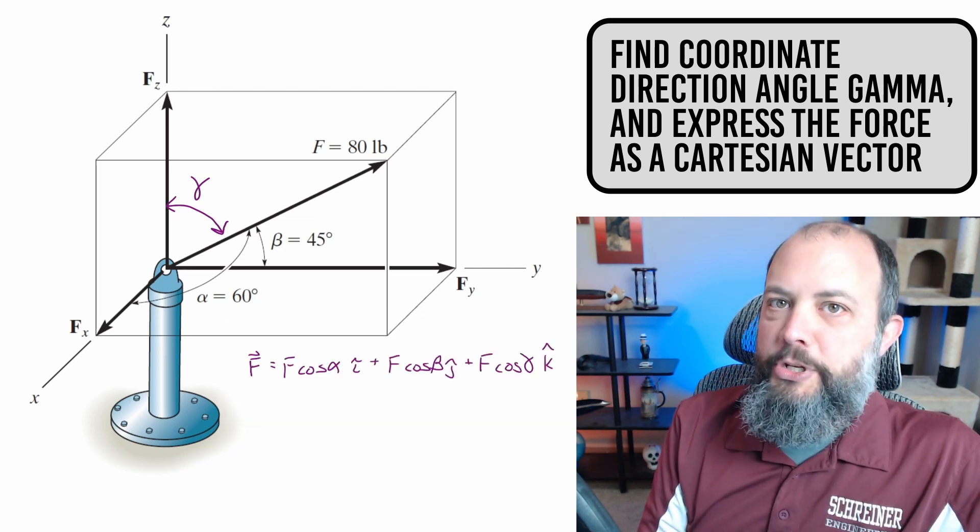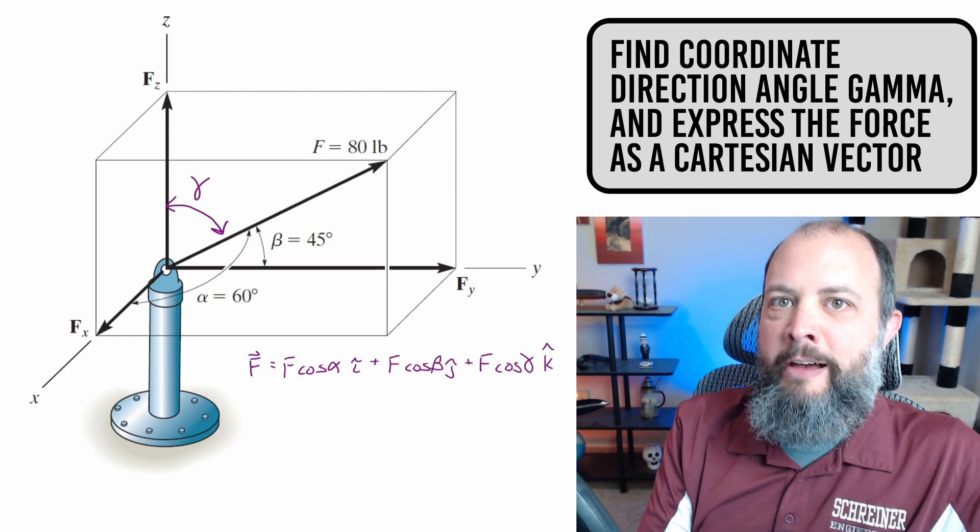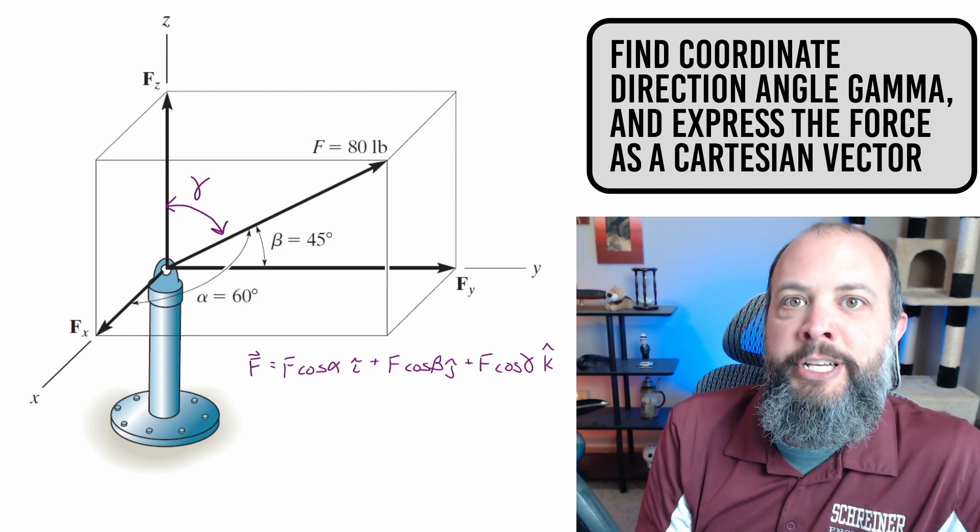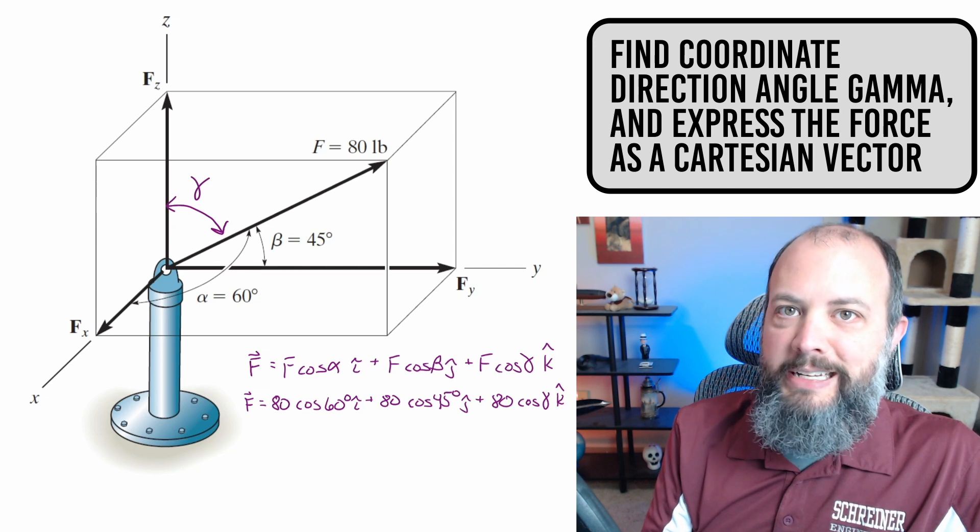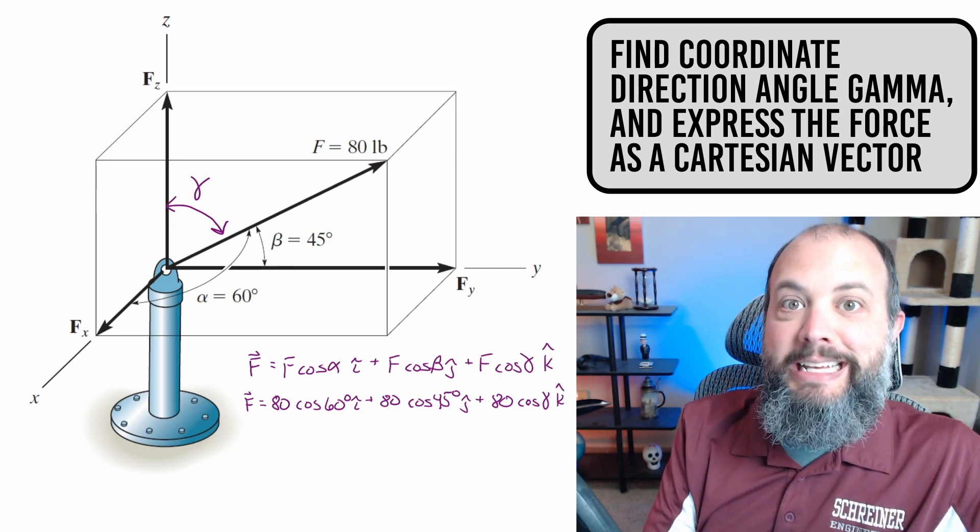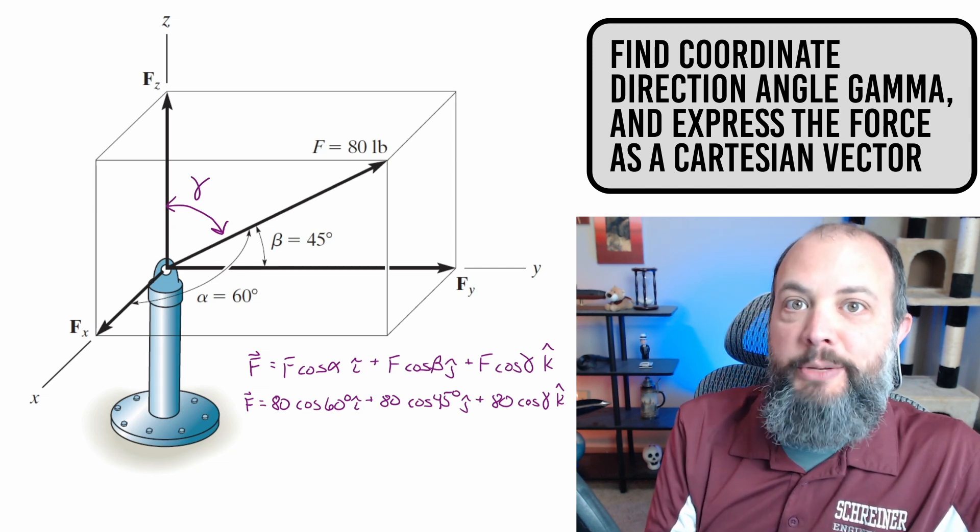And to convert to Cartesian form, you're just going to project the vector F onto each axis using cosine. Since two of the angles are given, finding the component in the X and Y directions, the I and J components, is going to be simple plug and chug.